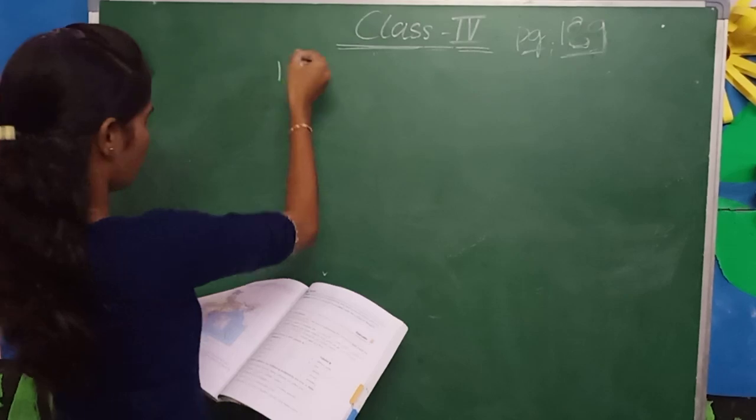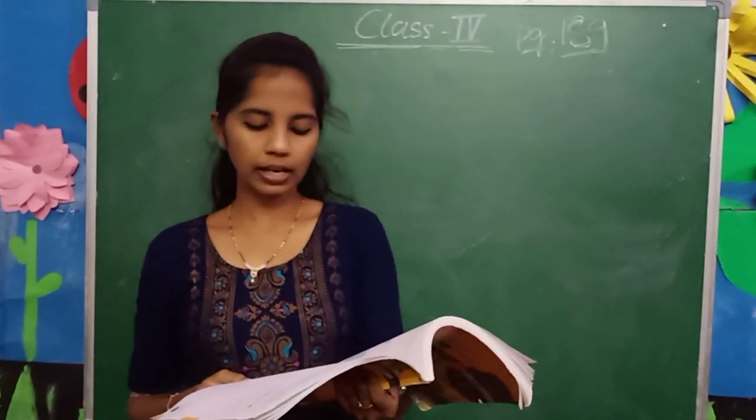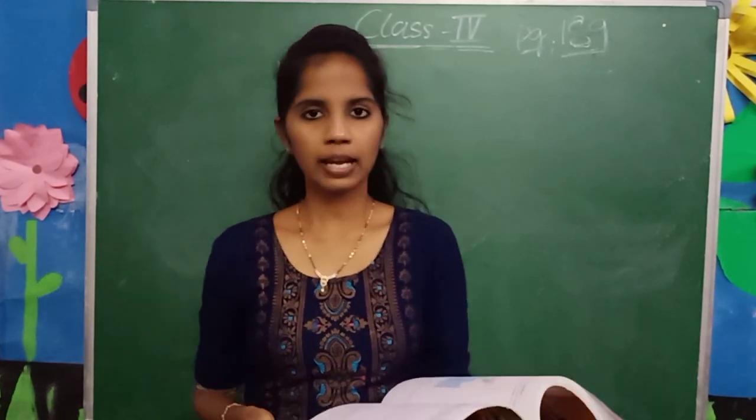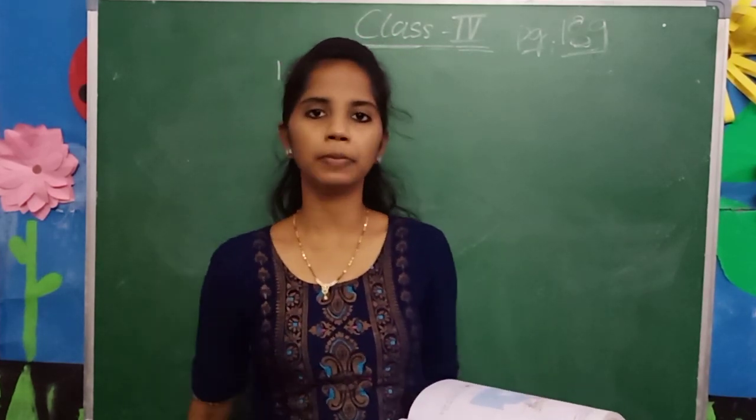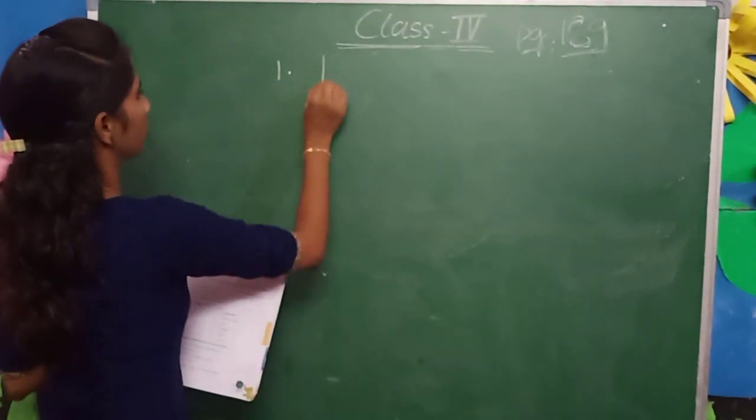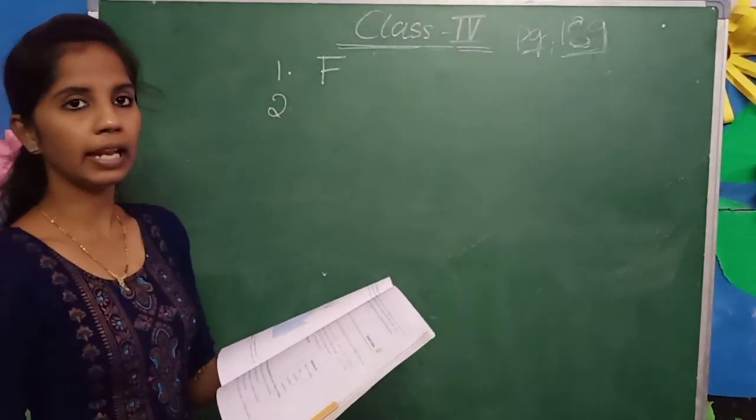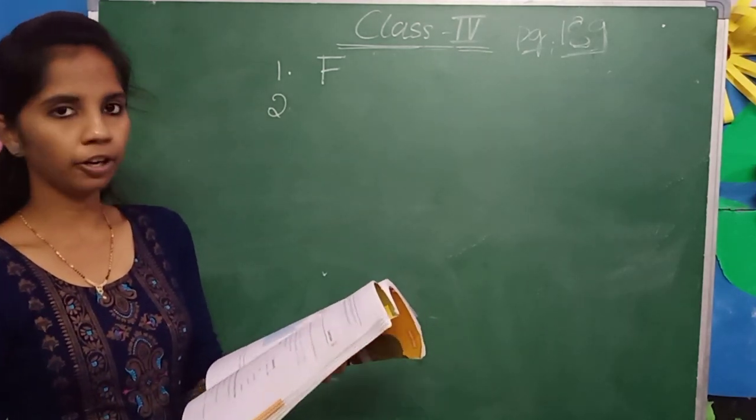So next one, state whether the following statements are true or false. Rocks that contain fewer minerals are called ores. Is it correct or wrong? Wrong. Why? Because the rocks which contain high amount of minerals are called ores, not fewer minerals. So write false. Copper is a non-metallic mineral. Is it right or wrong? Wrong. Why? Because copper is a metallic mineral, so write false.